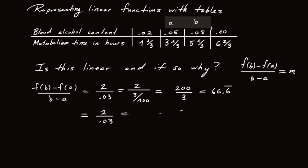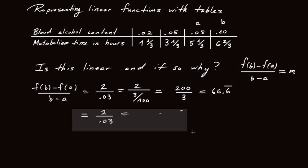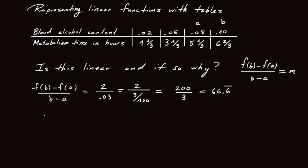Okay, let's move on. Let's now choose a to be 0.08 and b to be 0.10. Well, here things are a little bit different. Let's check. So here in this case, the change in the y values, f of b minus f of a, is going to be the difference between 6 and 2 thirds and 5 and 1 third. That's no longer 2. It's now 1 and 1 third.